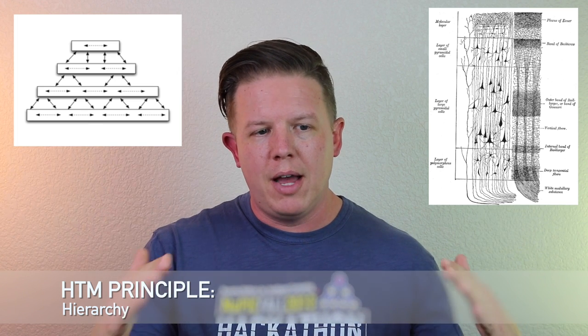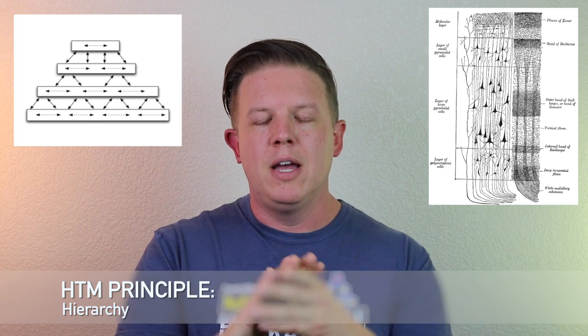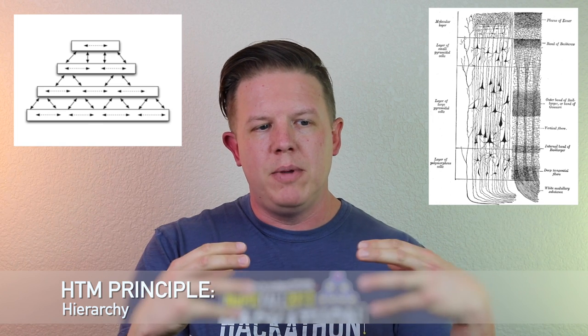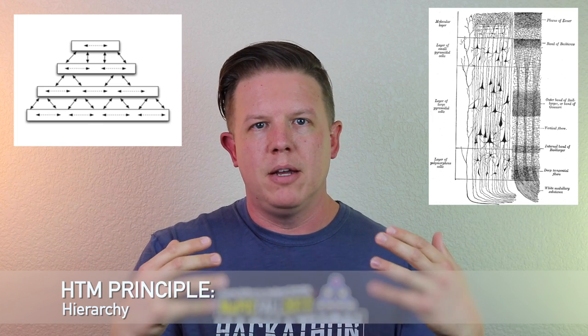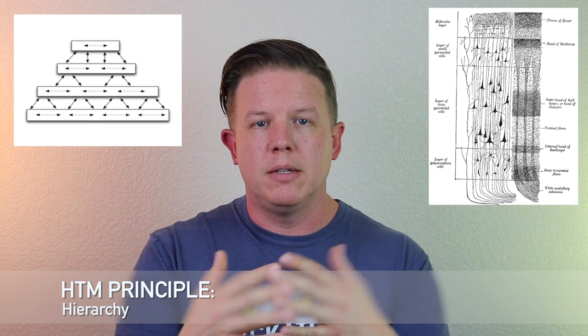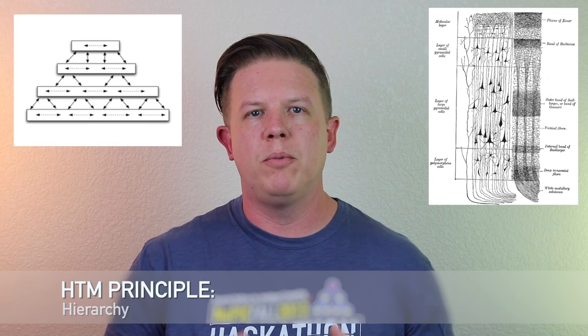As we climb or ascend that hierarchy, the ideas that are being understood over time become more abstract and more permanent. For example, if your brain sees a picture of an object, the lower levels of the hierarchy might be involved with determining edges or borders of things, and higher up in the hierarchy may be shape recognition.